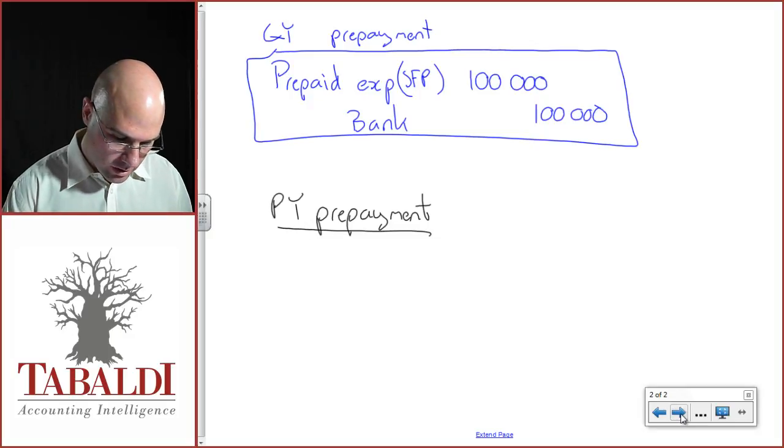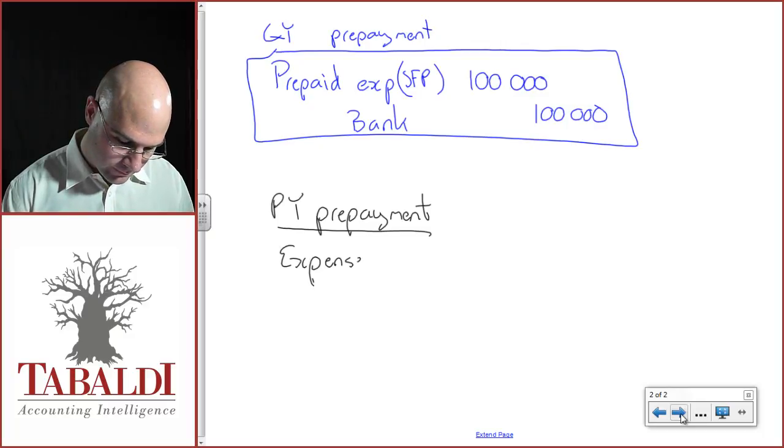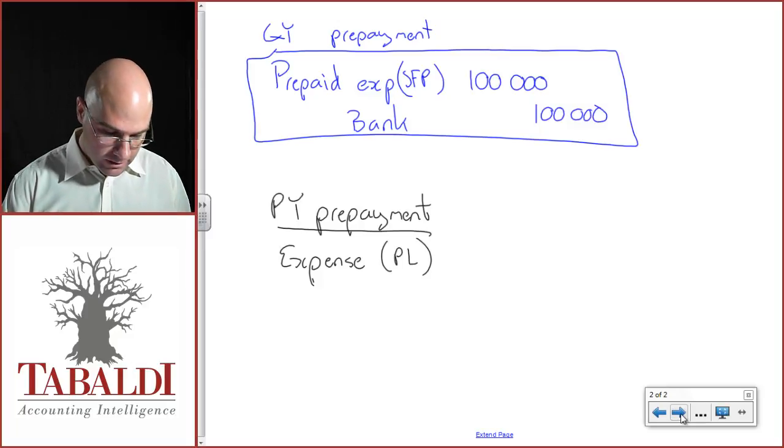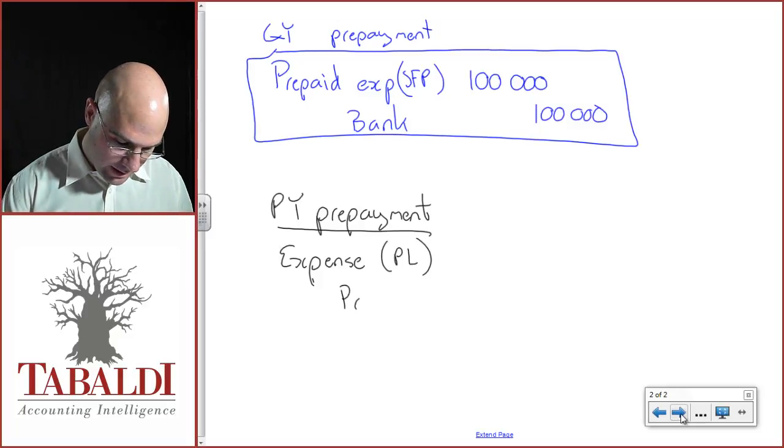So you are then going to go debit expense, rent expense for this example in profit and loss. And you are going to clear out that asset, the prepaid expense.